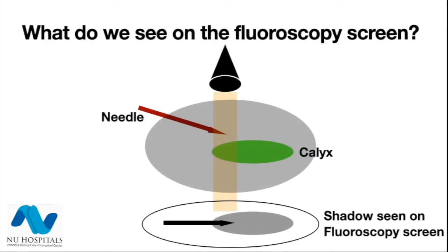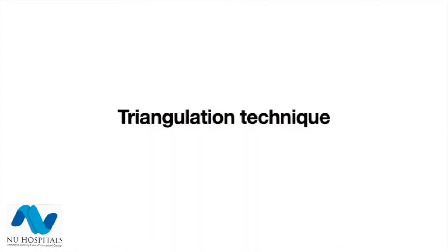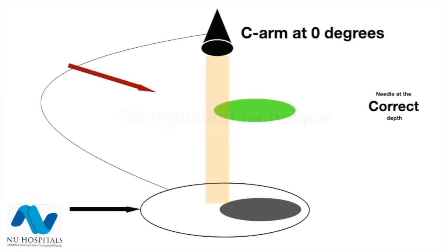What do we see on the fluoroscopy screen? It is important to understand that the image we see is the shadow of the needle falling on the shadow of the calyx. Let me start with the triangulation technique.